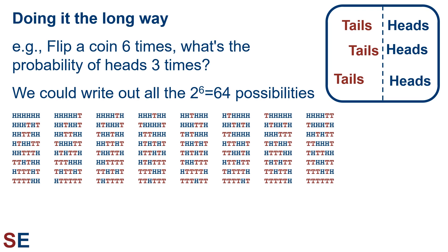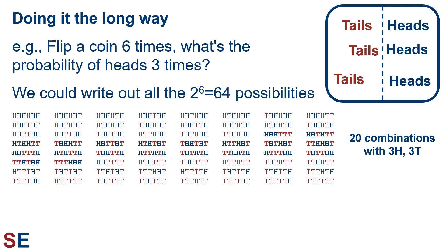Let's look at our coin flipping example, where we flip a coin six times and think about the probability of seeing heads three times. We could think of the sample space as being half heads and half tails and randomly looking at six outcomes. The probability of getting heads three times would be the number of times we get heads three times out of all possible results. We could write out all 2 to the 6 equals 64 possibilities. If we do this, we find that 20 of these possibilities out of 64 have three heads and three tails. This is obviously very time consuming and would get impossible very quickly, so we need a better way.